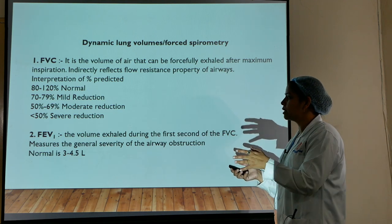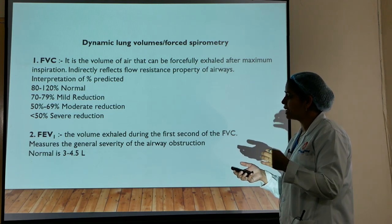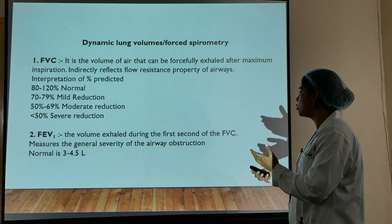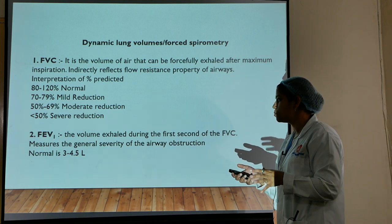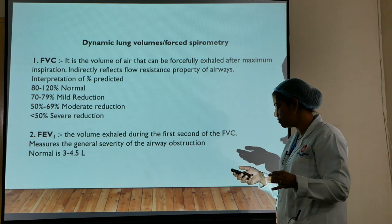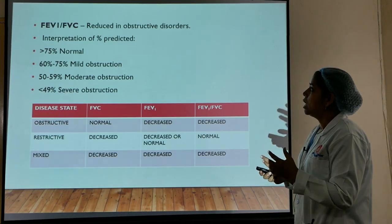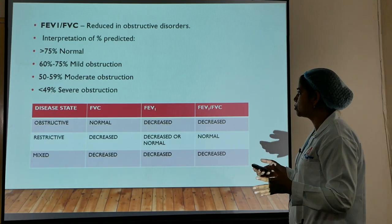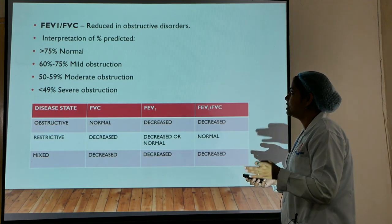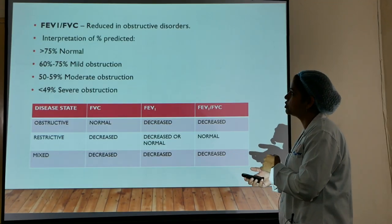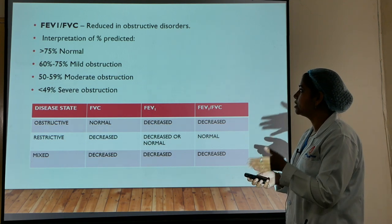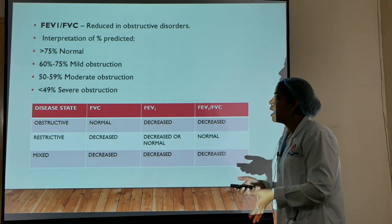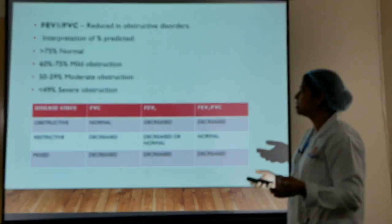FEV1 (forced expiratory volume in the first second) measures the volume exhaled during the first second of FVC and reflects the general severity of airway obstruction; it is normally 3 to 4.5 litres. The FEV1/FVC ratio is important for differential diagnosis and is reduced in obstructive disorders. Greater than 75% is normal, 60–75% is mild obstruction, 50–59% is moderate, and less than 49% is severe obstruction.